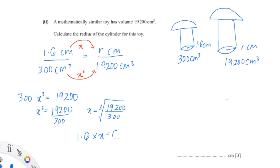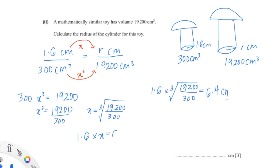Since we want to find x to calculate r, x equals the cube root of 19,200 over 300. So r equals 1.6 times x. Putting the cube root of 19,200 over 300 into the calculator and then multiplying by 1.6 gives us a value of 6.4 cm. So our radius is 6.4 cm.